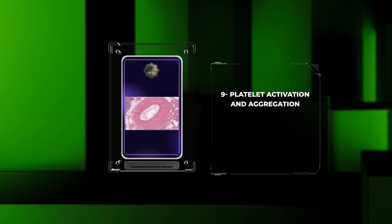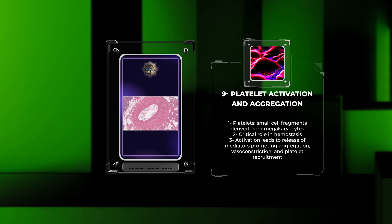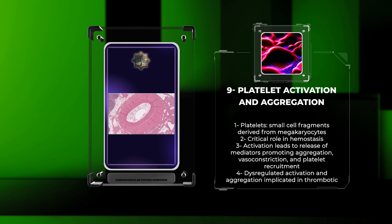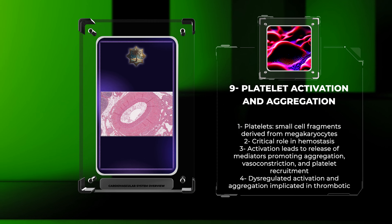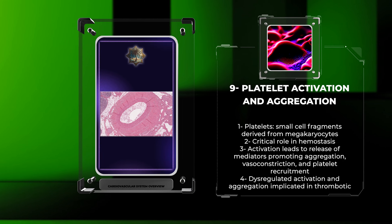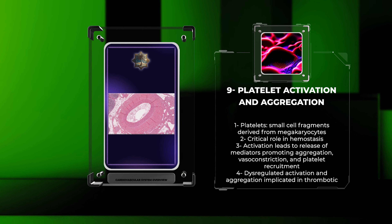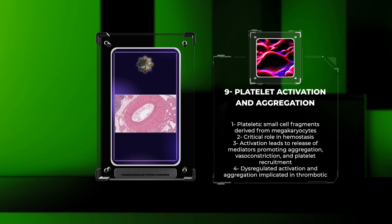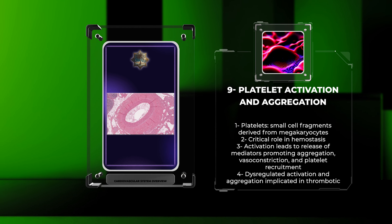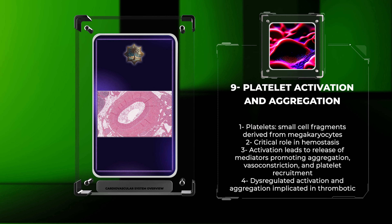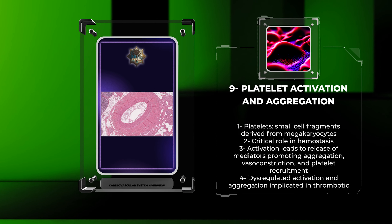Platelets are small anucleate cell fragments derived from megakaryocytes and play a critical role in hemostasis. Upon vascular injury, platelets become activated, releasing granules containing various mediators such as ADP, thromboxane A2, and serotonin. These mediators promote platelet aggregation, vasoconstriction, and recruitment of other platelets to the site of injury. Dysregulated platelet activation and aggregation are implicated in thrombotic disorders such as deep vein thrombosis and myocardial infarction.